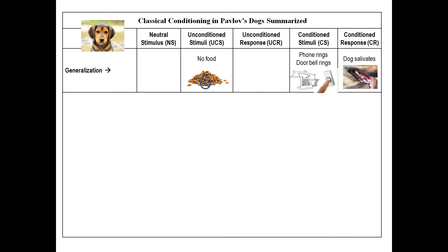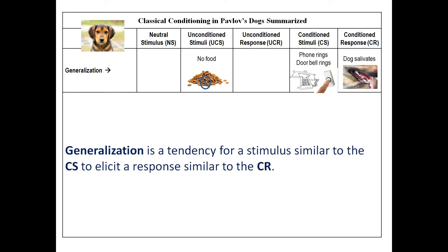There is a concept called generalization, where no food is given, but the conditioned stimuli can be a phone ringing or a doorbell ringing, which somewhat sounds like a bell ringing, and the dog still salivates. Generalization is a tendency for a stimulus similar to the CS to elicit a response similar to the CR.